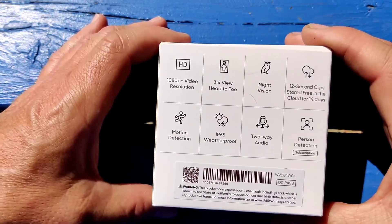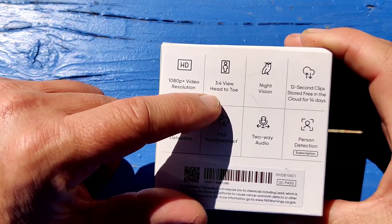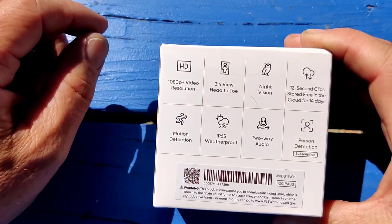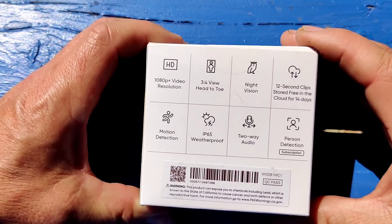Three to four view head to toe, so meaning most video doorbells do like a 16 by 9, almost like landscape mode only, and it only covers half. This does a full length so you can actually see someone from head to toe. Night vision of course.